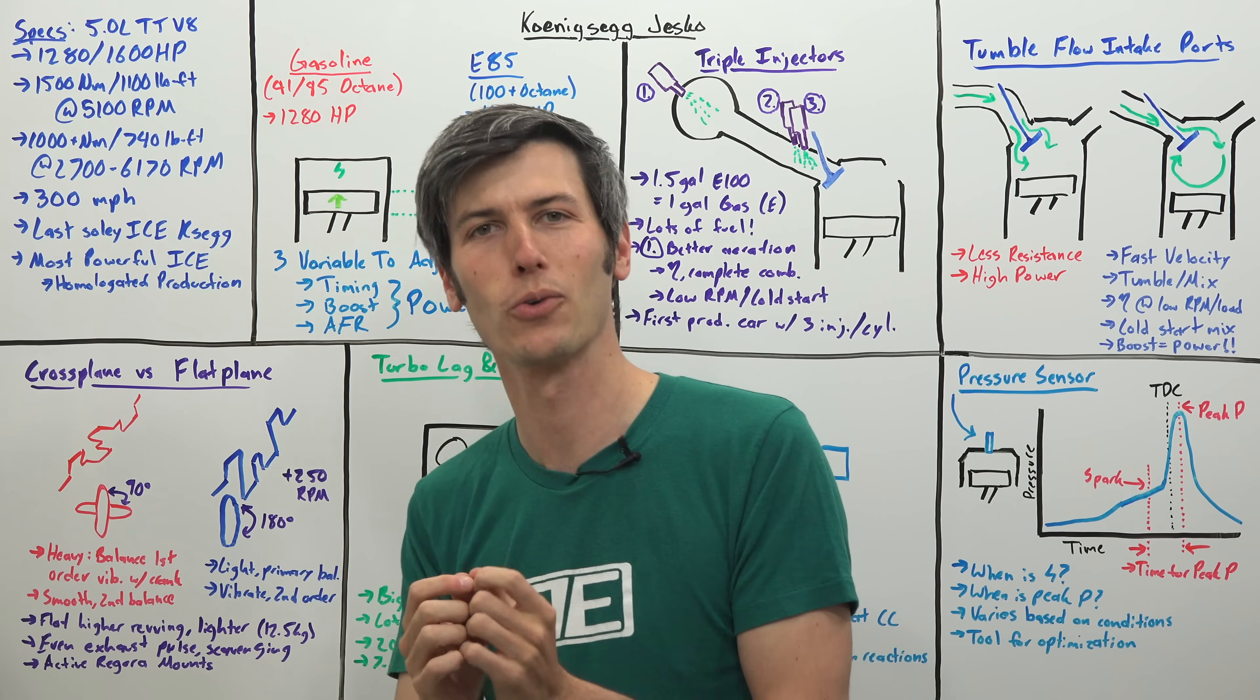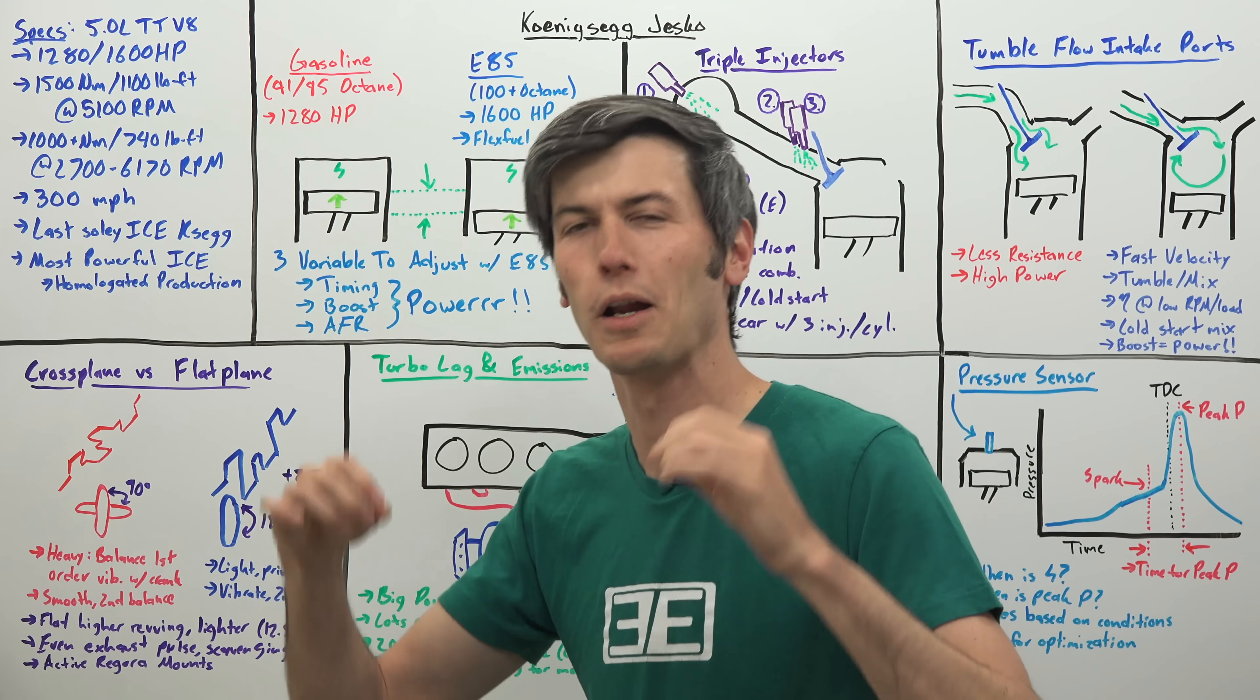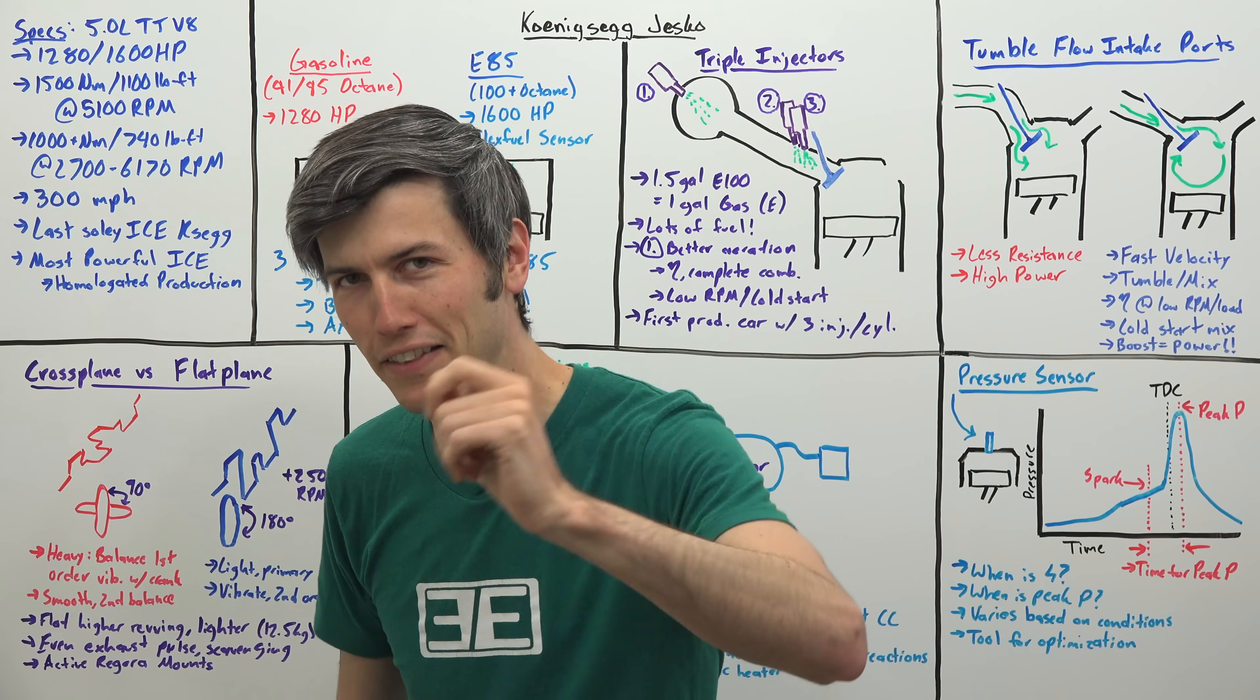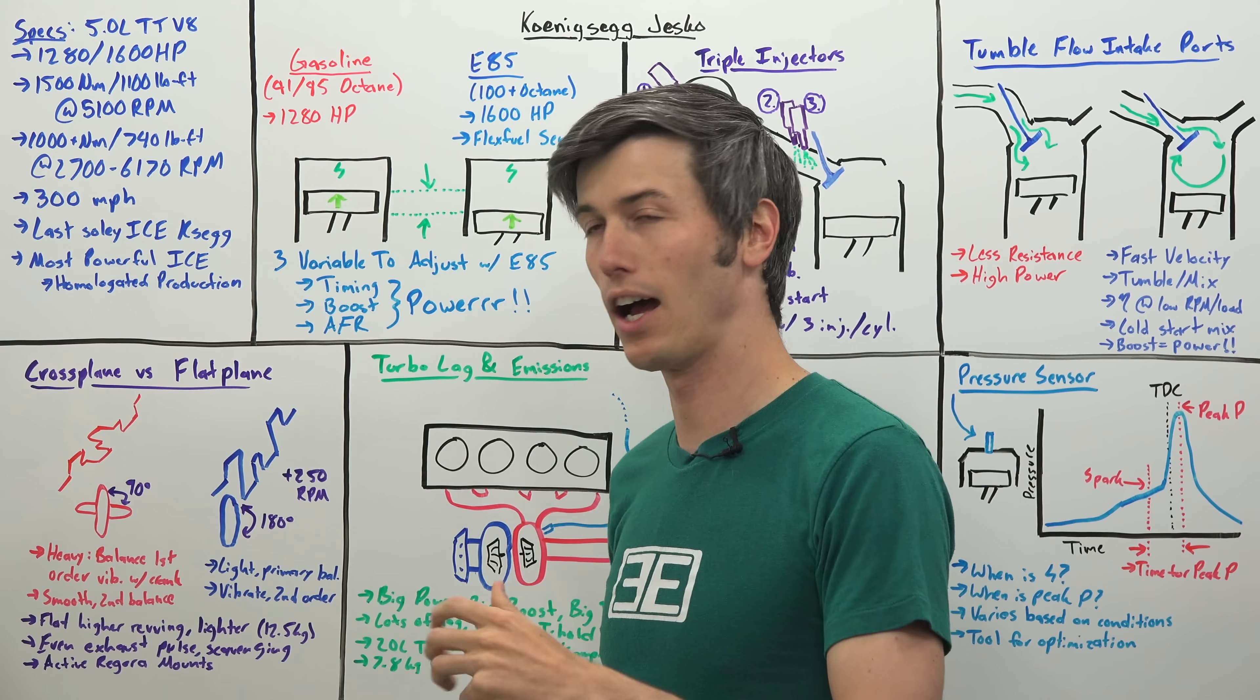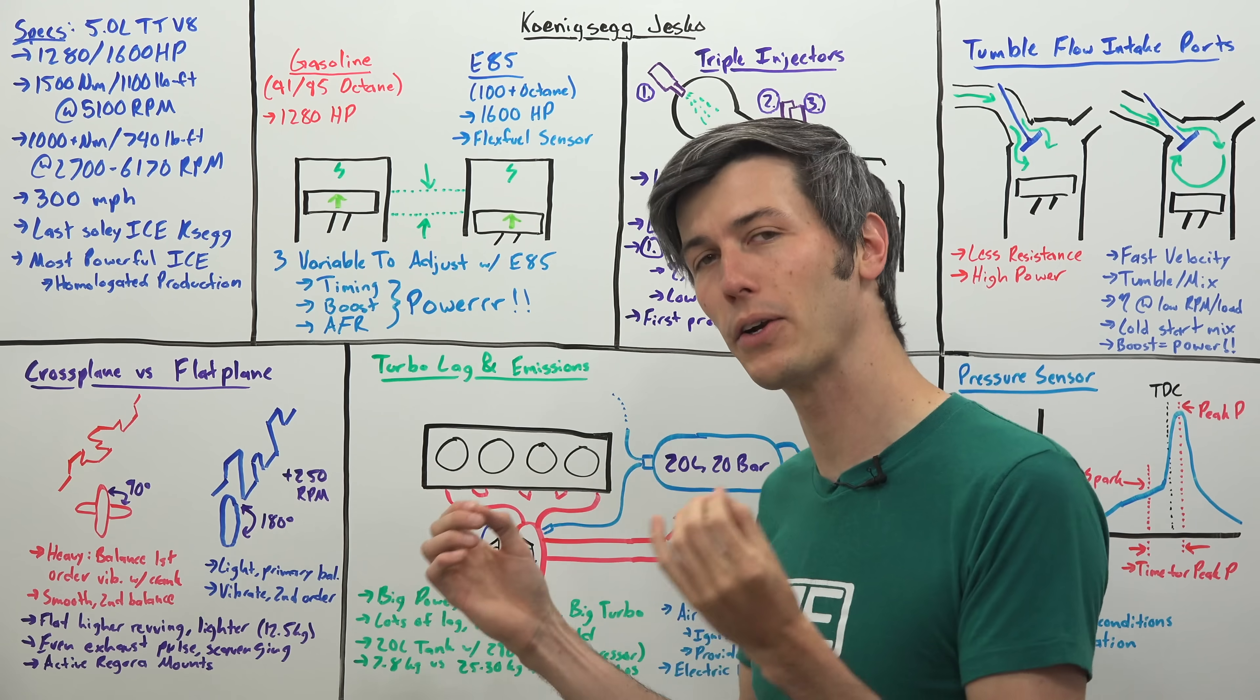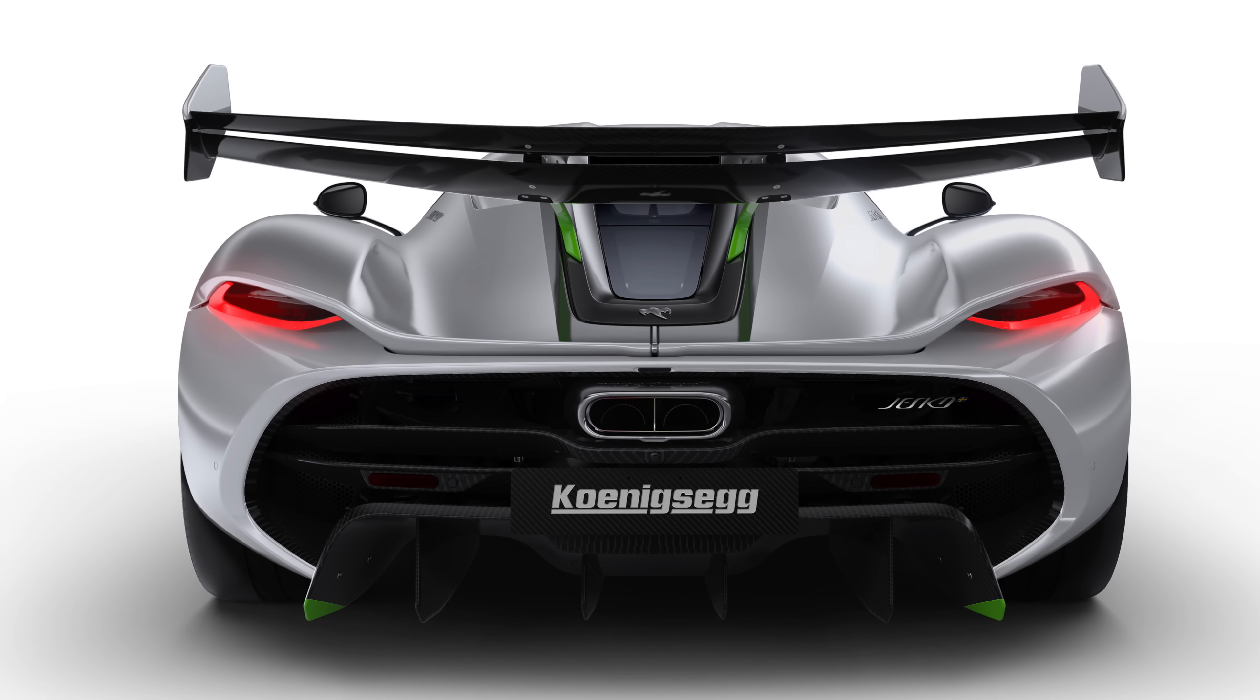This is the most powerful internal combustion engine they have ever created. Koenigsegg states that this is the most powerful homologated production internal combustion engine ever. I don't know of another production engine which is globally street legal and globally meets emissions. That's very hard to do when you're trying to create an engine that has 1600 horsepower but also meet all of the emission regulations.